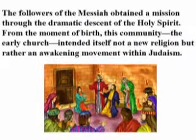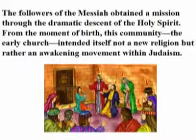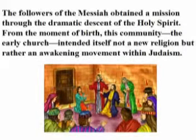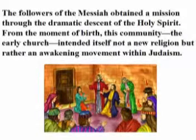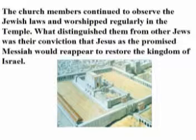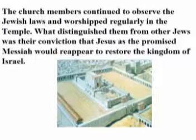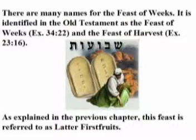The followers of the Messiah obtained a mission through the dramatic descent of the Holy Spirit. From the moment of its birth, the early church intended itself not as a new religion but rather as an awakening movement within Judaism. Church members continued to observe the Jewish laws and worshiped regularly in the temple. What distinguished them from other Jews was their conviction that Jesus, as the promised Messiah, would appear to restore the kingdom of Israel.